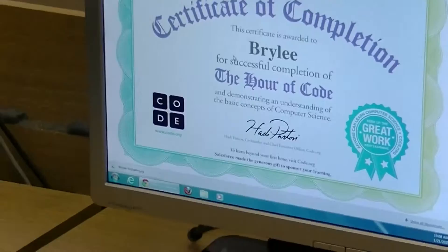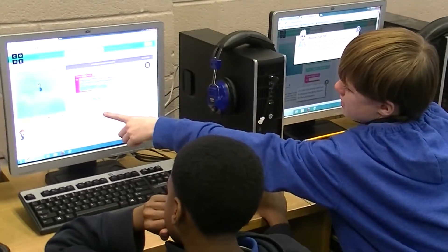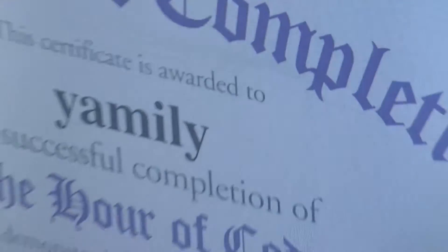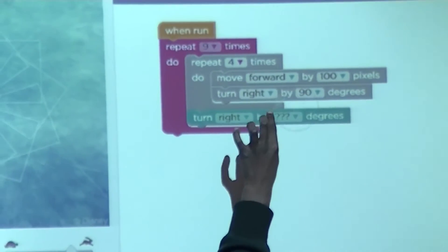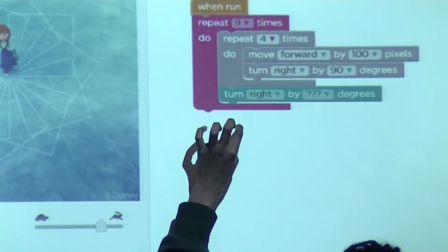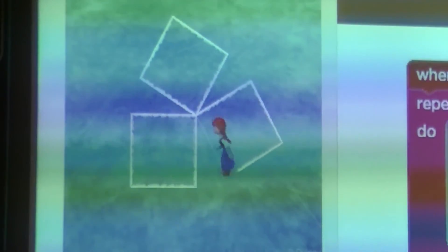All the colors of the rainbow so pretty in the sky are also on the faces of people going by. I see friends shaking hands saying how do you do, they're really saying I love you. I hear babies cry, I watch them grow, they'll learn much more than I'll ever know. And I think to myself, what a wonderful world.